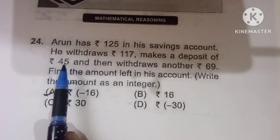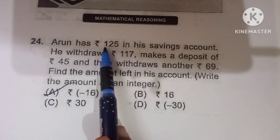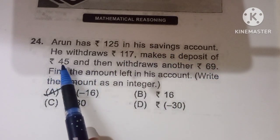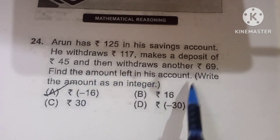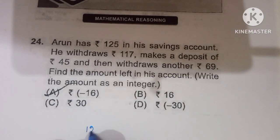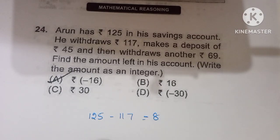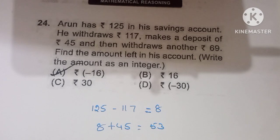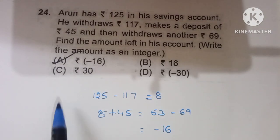Twenty-fourth question: Arun has 125 rupees and withdraws 117 rupees, leaving 8 rupees. He then deposits 45 rupees, giving 53 rupees. Then he withdraws 69 rupees: 53 minus 69 equals minus 16 rupees. Option A is the correct one.